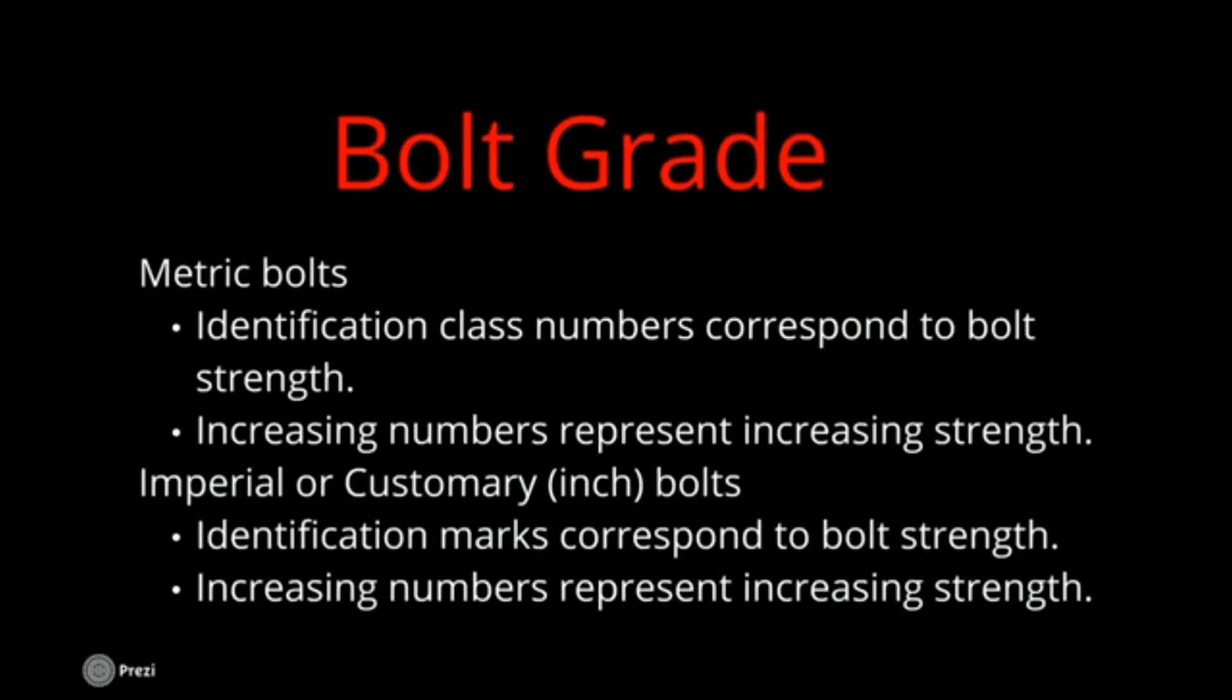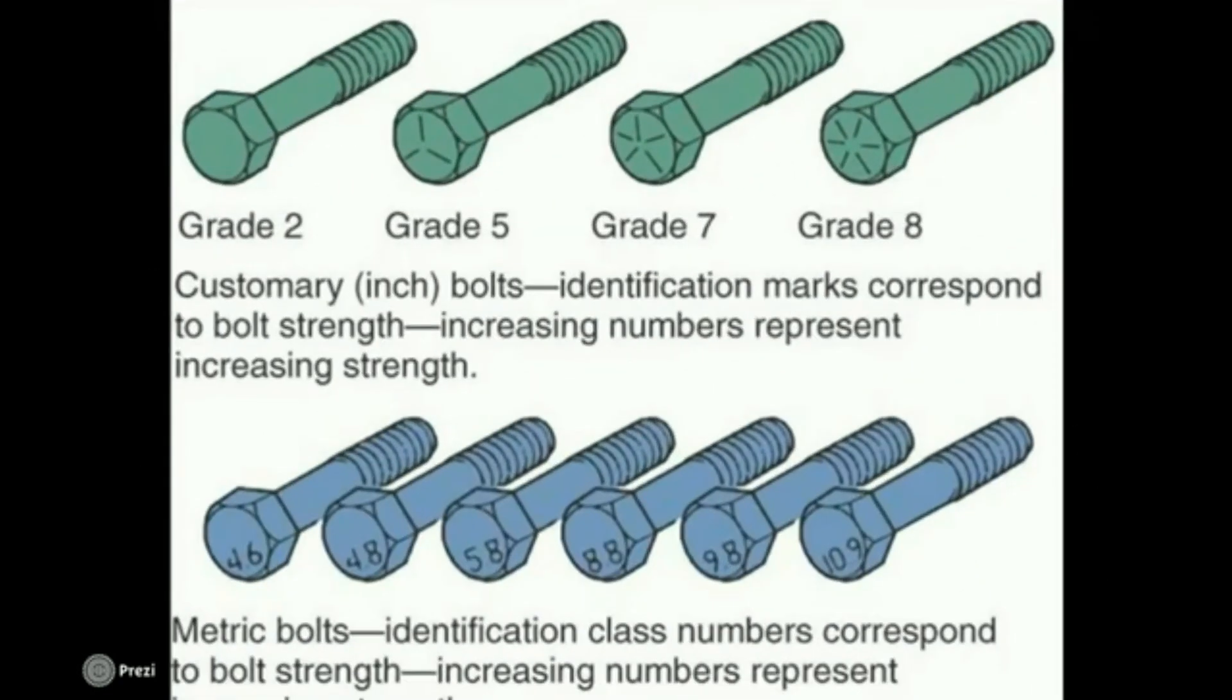Bolt grade is, with metric bolts, it's identified by numbers on the top. And the higher the number, the stronger the bolt. And on customary bolts or imperial or standard, they're the number of dashes on top at plus two. So if there's three dashes, it will be grade five.